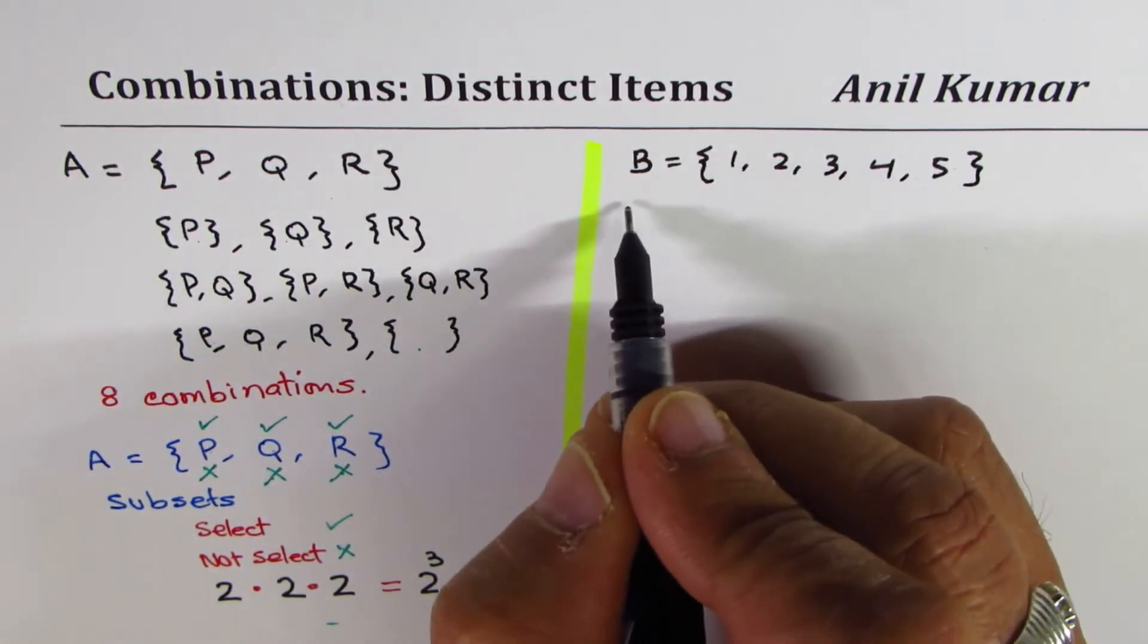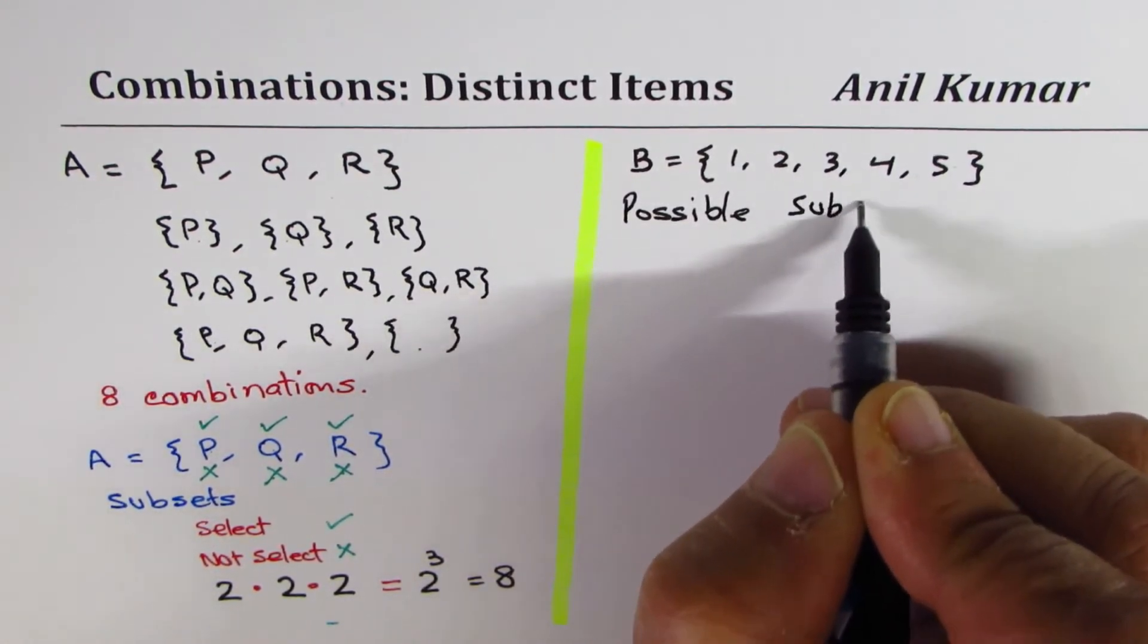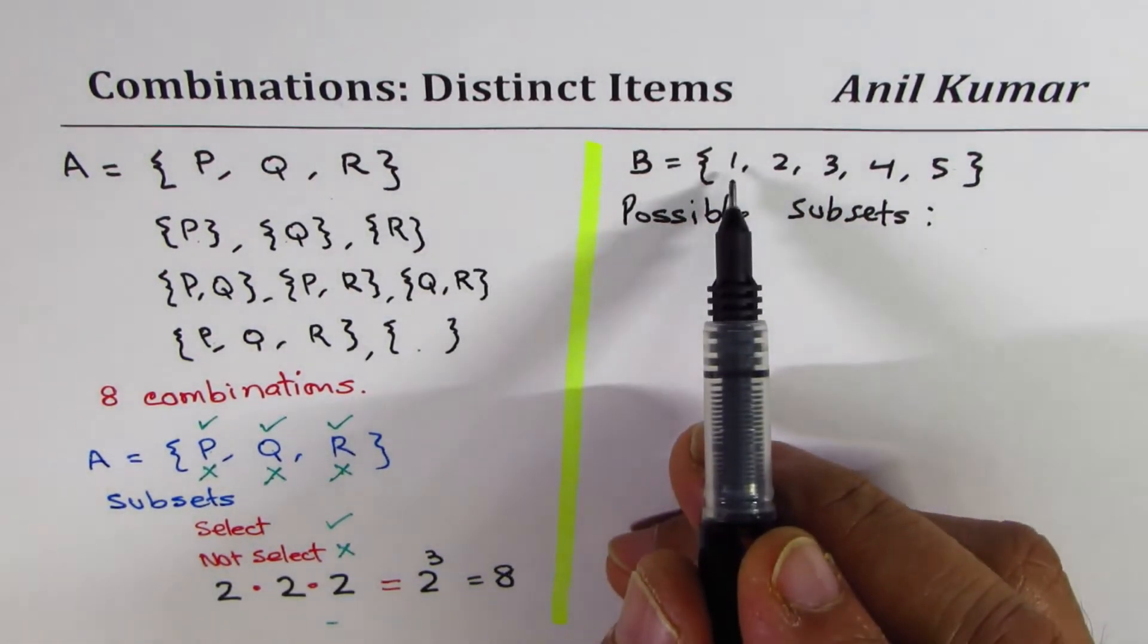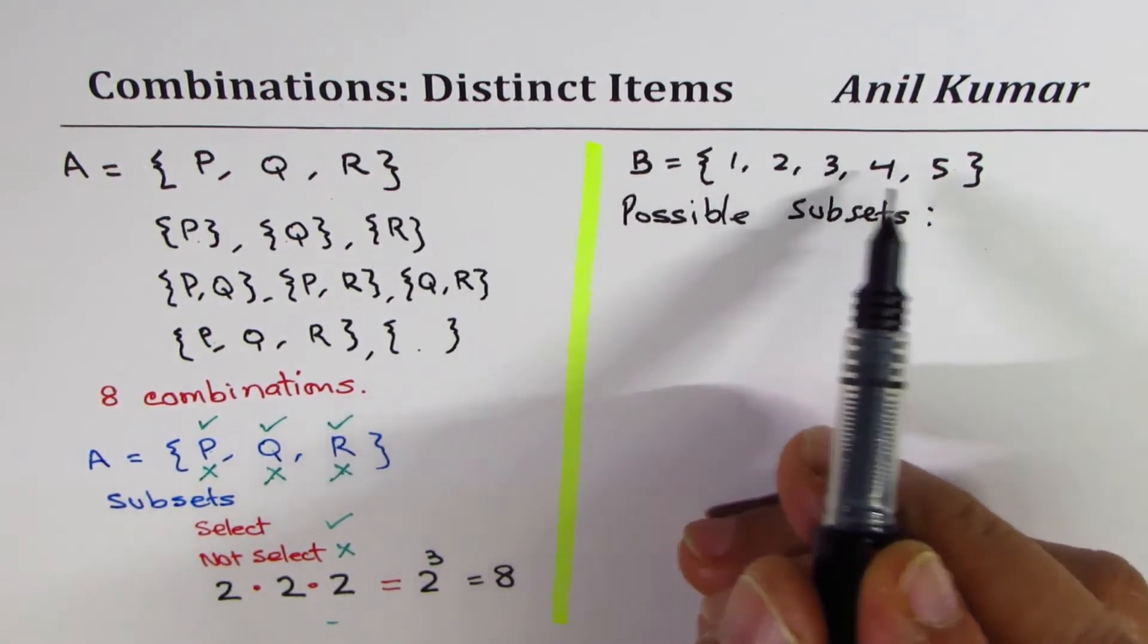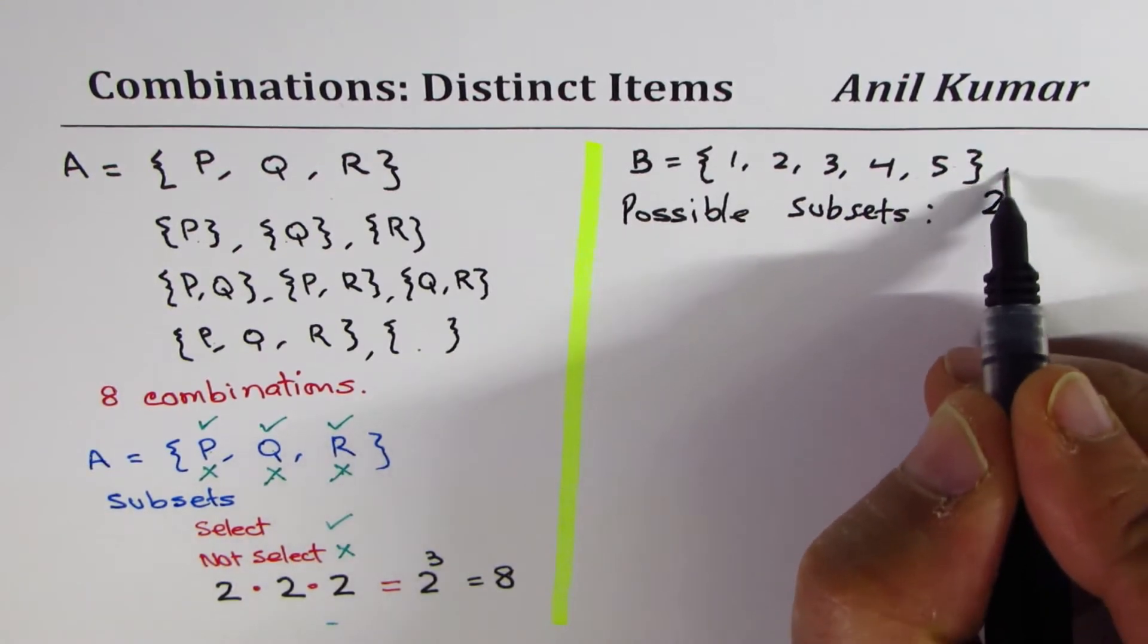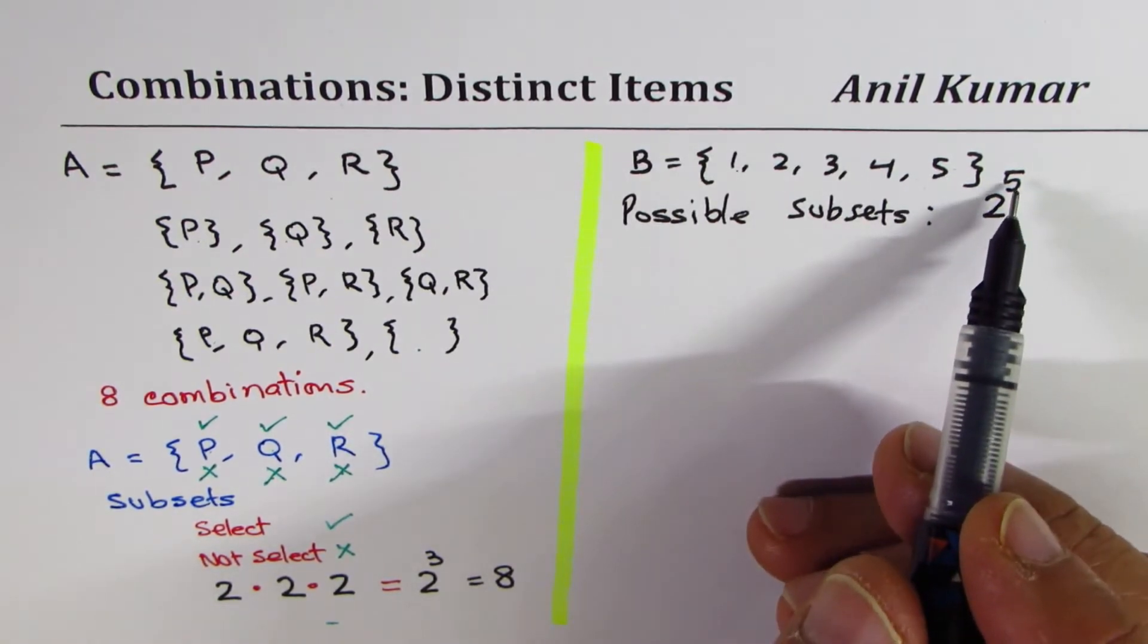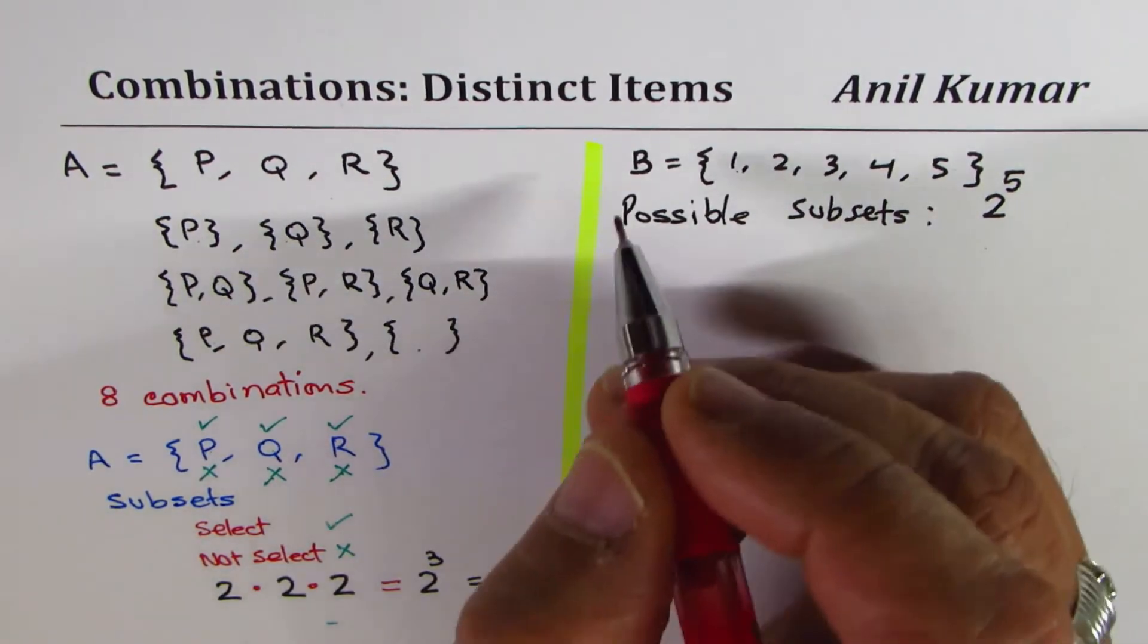Then how many possible subsets can you make? So that's the question for you, just to check if you've got the concept. I could choose one. I may not choose. I may choose two. I may not choose. So for each element, I have two choices. So in all, I have 2 to the power of 5 choices. I may not select any one of them. So that makes us 2 to the power of 5. So, I hope the concept is clear to you.